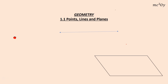When we're dealing with points, lines, and planes, it can be a difficult thing. So just to get a few terminology things out of the way: if we were to take a dot, that's how we show it in geometry, and put a letter next to it, we label that as point A. A point has no dimension, but in geometry we show it with a dot.